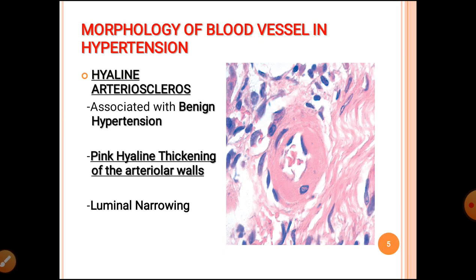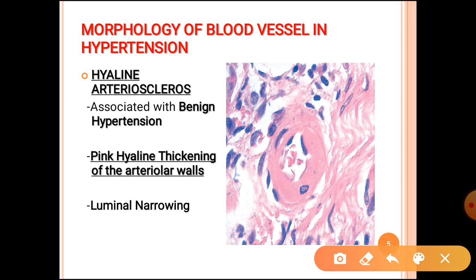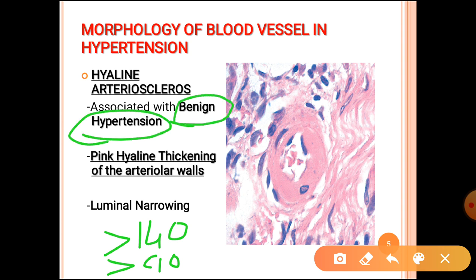Now we will see the effect of hypertension over the blood vessel — the morphology of the blood vessel in the hypertensive patient. Blood vessel can be affected in two ways. In benign persistent hypertension, where systolic blood pressure is greater than 140 and diastolic is greater than 90, over time you can develop homogeneous pink hyaline thickening in the arterial wall — as seen here with the arrow. There will be luminal narrowing.